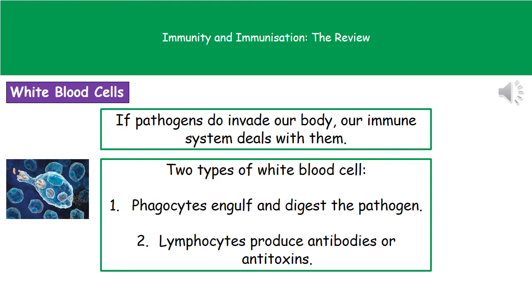Despite us having all those barriers, every so often one of these pathogens will get inside our body. At that point we go into our second line of defense, which is the immune system. The primary part of our immune system are the white blood cells. We've got two different types: phagocytes, which engulf and digest the pathogen, and lymphocytes, which produce antibodies or antitoxins to that particular pathogen.